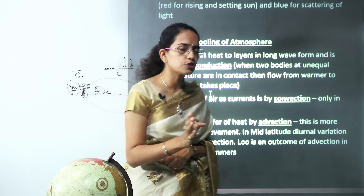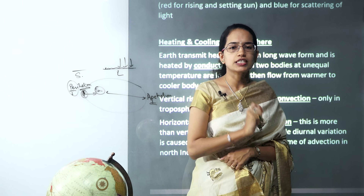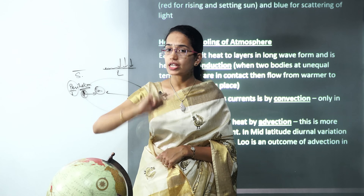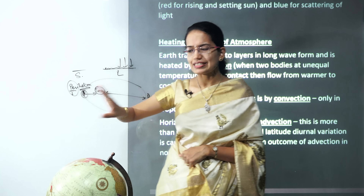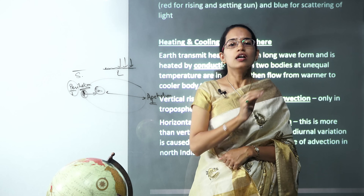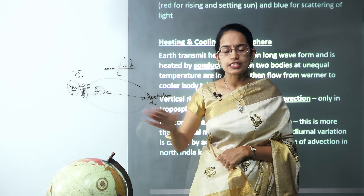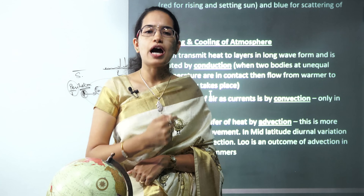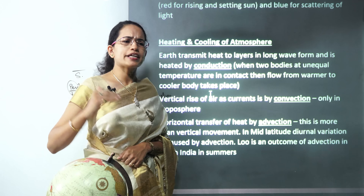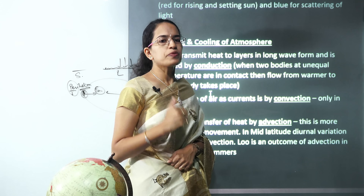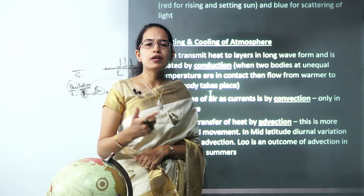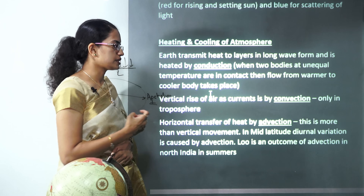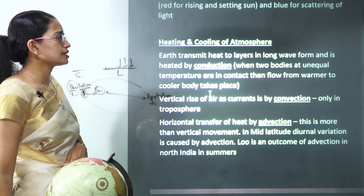The next very important concept is advection. Under advection there is horizontal transfer of energy, not vertical. This horizontal transfer of heat is caused by wind or ocean currents, requiring some external trigger. A good example of advection is the 'loo' — the local wind in India. These are the ways through which heating and cooling of the atmosphere takes place.